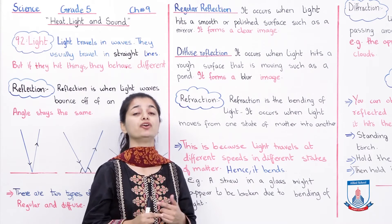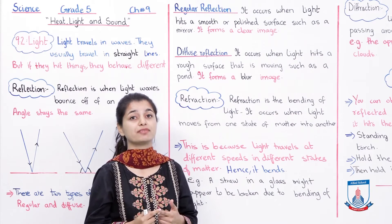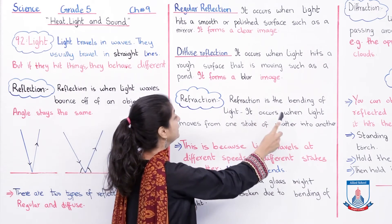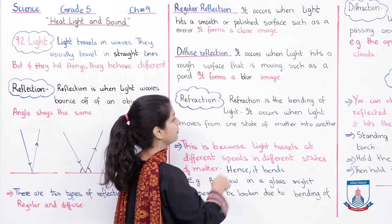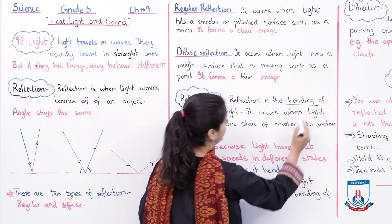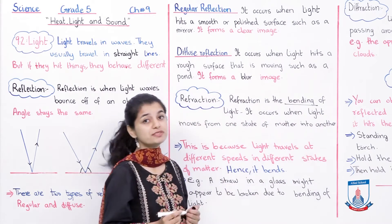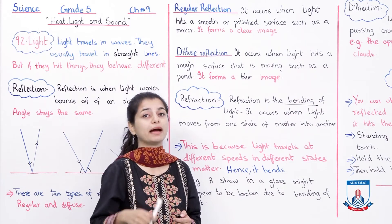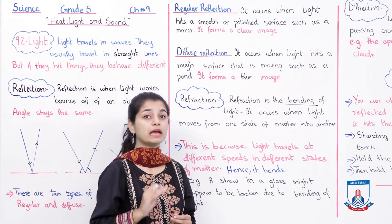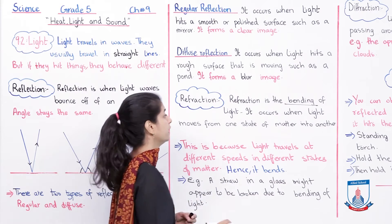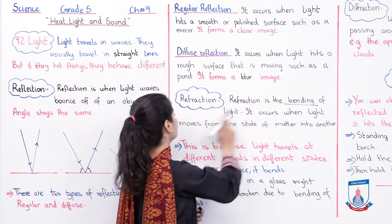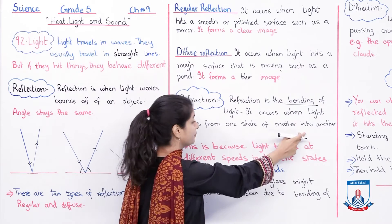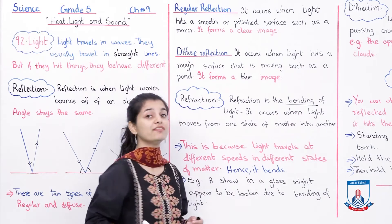Now we will discuss how light behaves in another way: refraction. Refraction is the bending of light — this is different from reflection. In reflection, light bounces back. In refraction, it bends. It occurs when light moves from one state of matter into another.